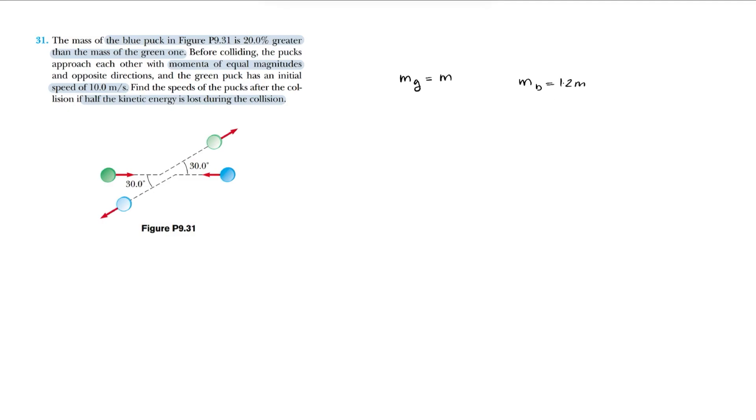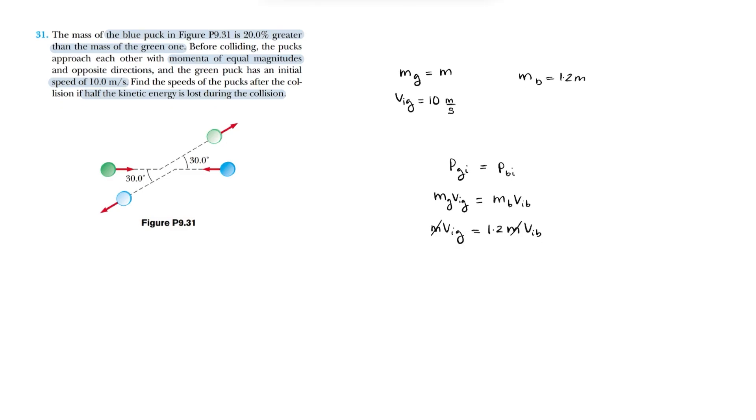And we're given that the initial velocity of the green puck is 10 meters per second. And we know that the initial momentum of both of them are the same, so we can sum it up in both directions: mg vig equals mb vib. And if we plug in what we solved for masses, we can cancel out the m's. So we can see that velocity initial of green is 1.2 times velocity initial of b. So if we divide 1.2 from both sides, we'll get 10 divided by 1.2, which is approximately 8.33 meters per second.